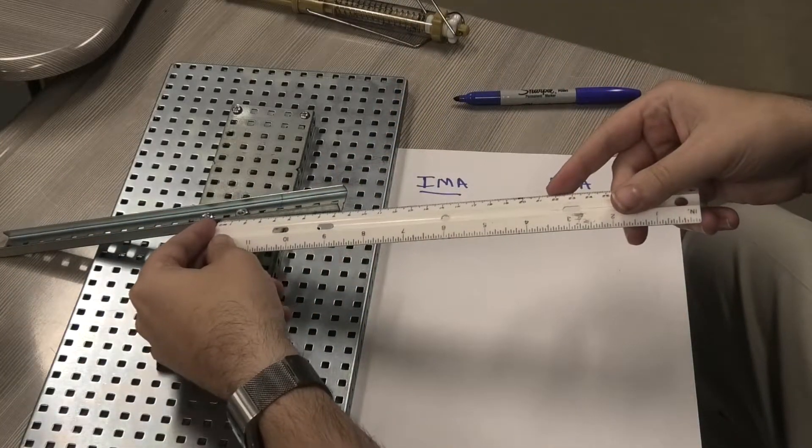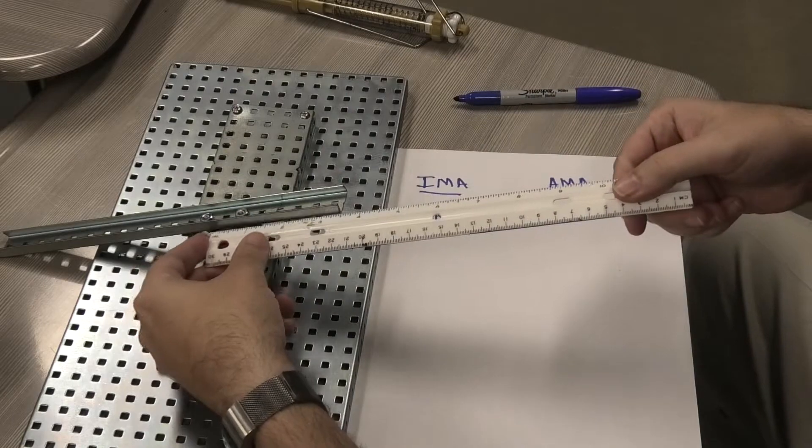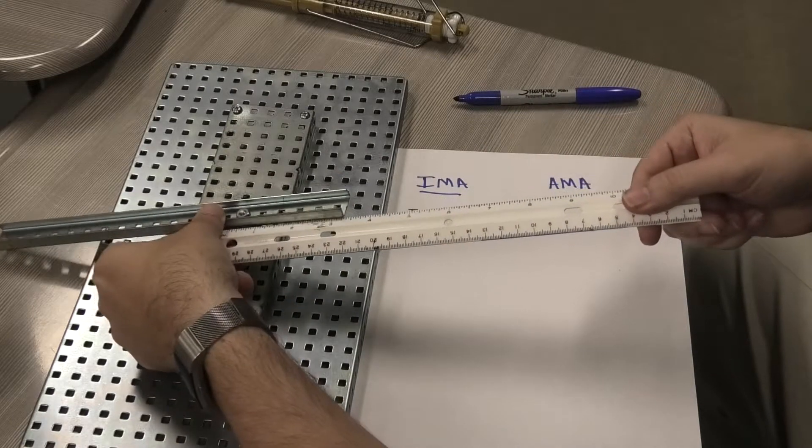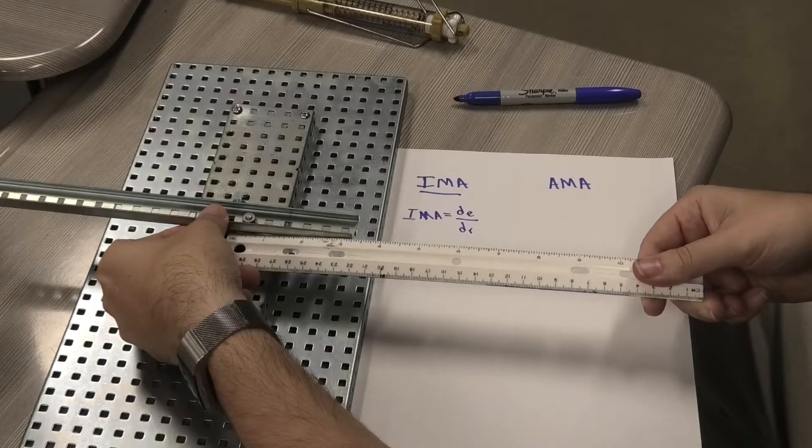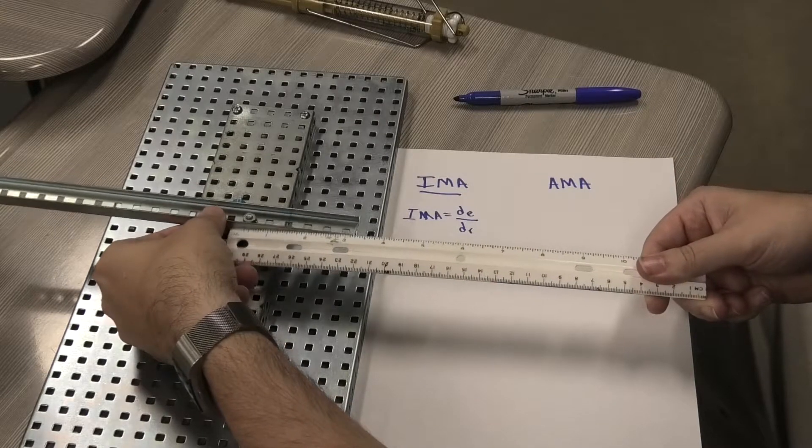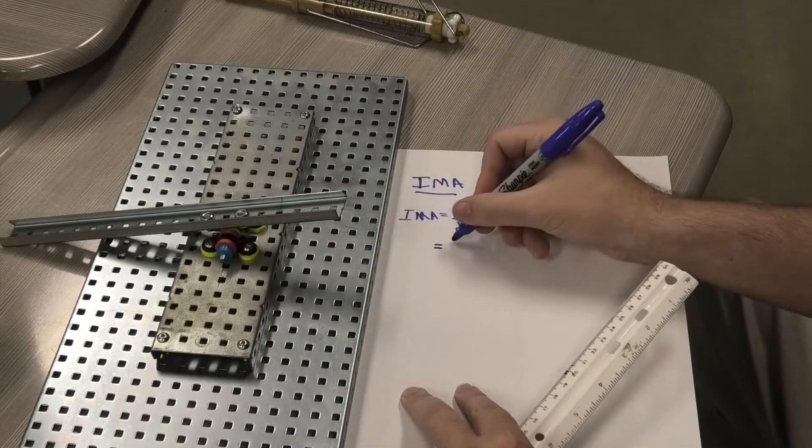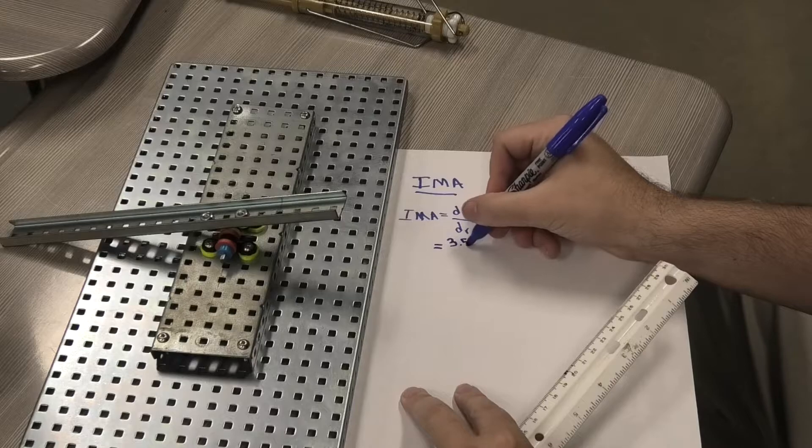Let's get an idea of what they look like. Let's use the inch side. On this side looks like we're about three point seven five inches, actually I'd say more close to three and a half. So let's go three and a half for the effort distance. The effort distance is going to be 3.5.